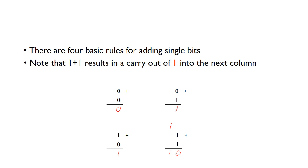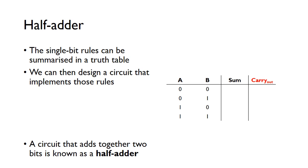We can put those four rules in a truth table. Zero and zero: no sum, no carry. Zero and one: sum of one, carry of zero. One and zero: sum of one, no carry. And one and one: sum of zero with a carry of one.